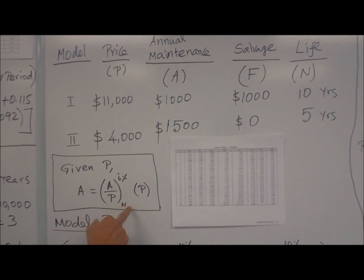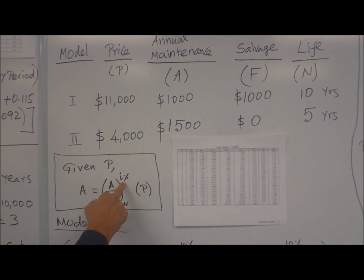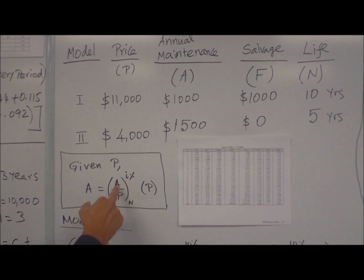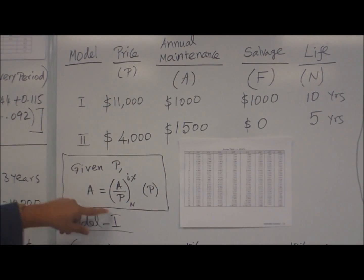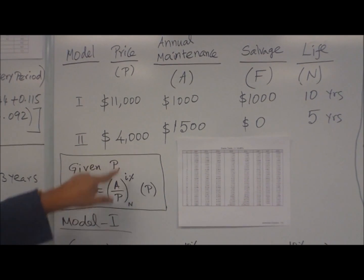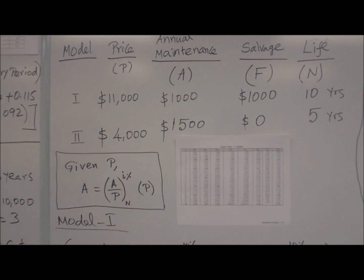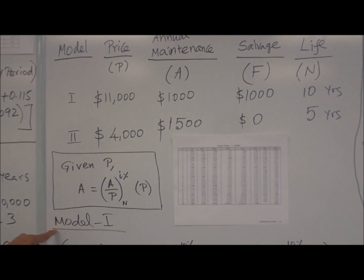Like A/P times P, P cancels, you get A. You get this ratio from the factor table. Again, you can find that in your handbook. Now for example, Model 1: ANEV_1 equals minus (A/P).